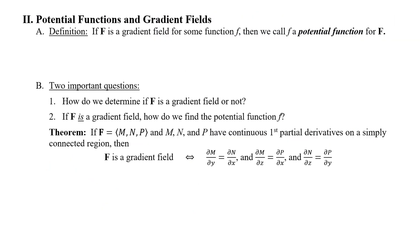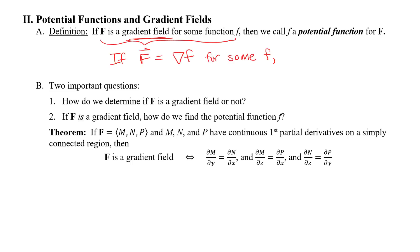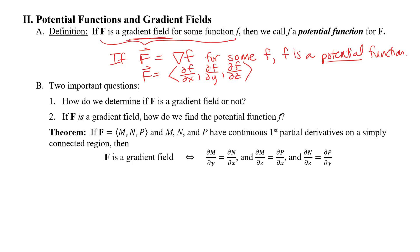We have a couple more definitions. One is related to gradient fields. If capital F is a gradient field for some function little f, then we call that little f a potential function for F. In some sense the potential function is like an antiderivative — if F is a gradient vector field, then F has components that are partial derivatives. Two important questions: how do we determine if capital F is a gradient field, and if it is, how do we find that potential function? And why do we care? That's answered by the fundamental theorem of line integrals.